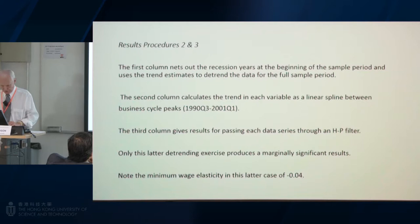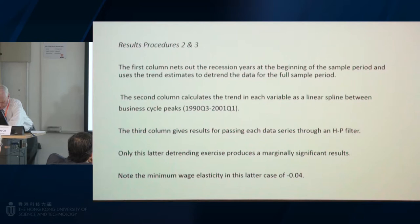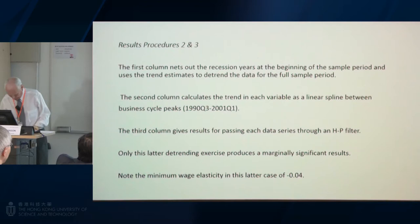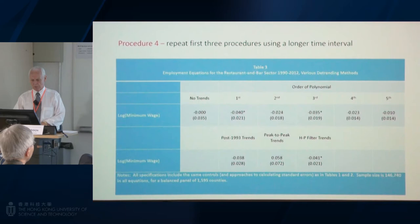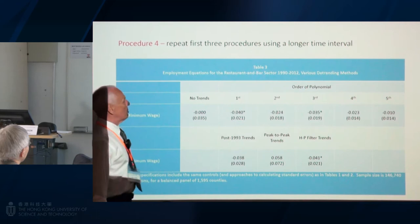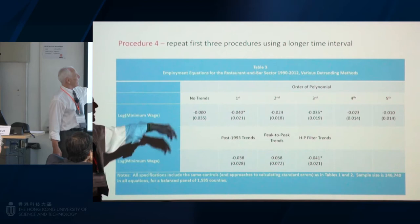Only the Hodrick-Prescott filter produces a marginally significant effect, similar elasticity as in the previous case. I'm no expert on the Hodrick-Prescott filter, but I am familiar with the criticism of it — that it is of a rather mechanical nature, with the filter tending to find cycles in the data when cycles are not present. I'd refer you to the work of Cogley and Nason, 1995, in the Journal of Economic Dynamics and Control. But I don't want to make that as a cheap shot — I'm just a little worried, as a lot of labor economists are, with these procedures.